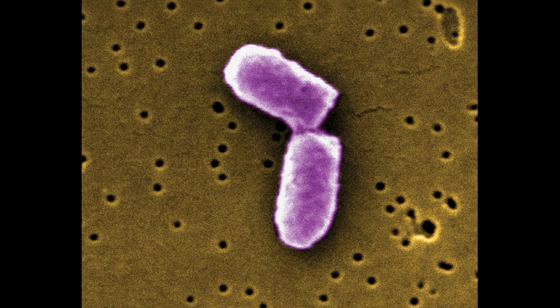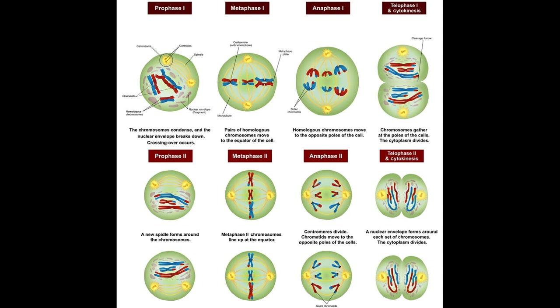Organisms have various developmental pathways. Asexual prokaryotes reproduce through binary fission. Eukaryotes, on the other hand, recombine their chromosomes during meiosis, which we discussed in cell cycles, giving rise to genetically distinct offspring.